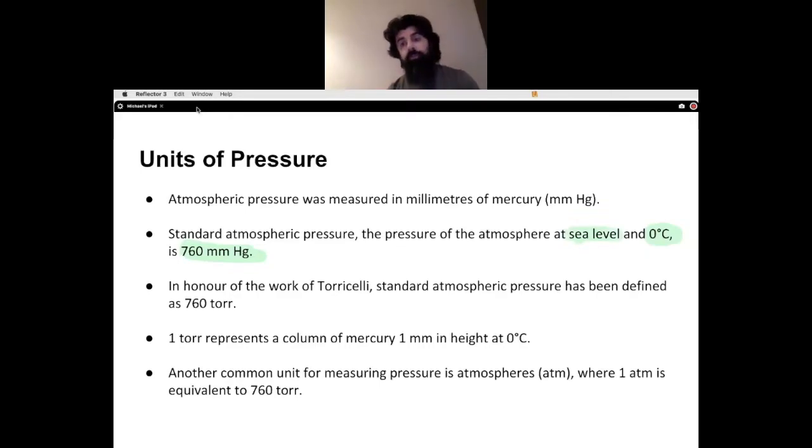Torricelli's experiment was not considered a failure. He just discovered that the atmosphere around us exerts a different pressure from day to day based on the weather outside and the air temperature changes that are also occurring. Some units of measure that we're using: 760 millimeters of mercury at zero degrees Celsius when we're at sea level. In honor of Torricelli, we could also use 760 Tor. These are both interchangeable units.